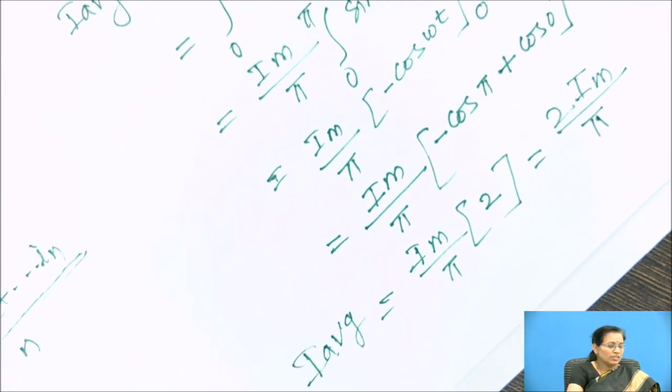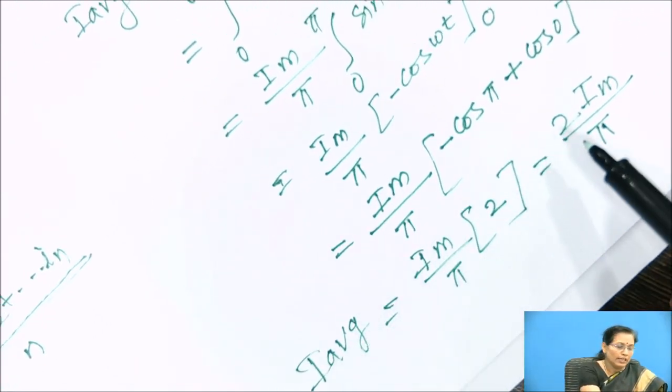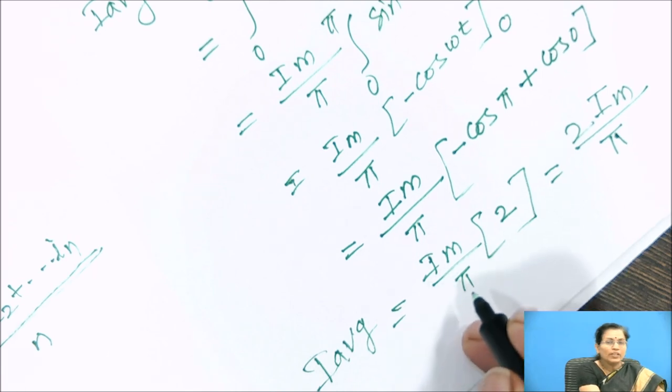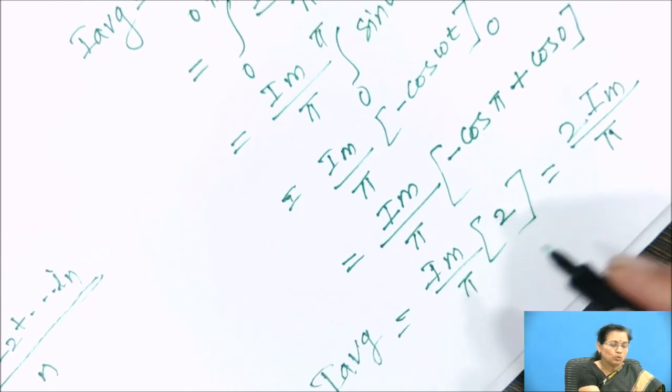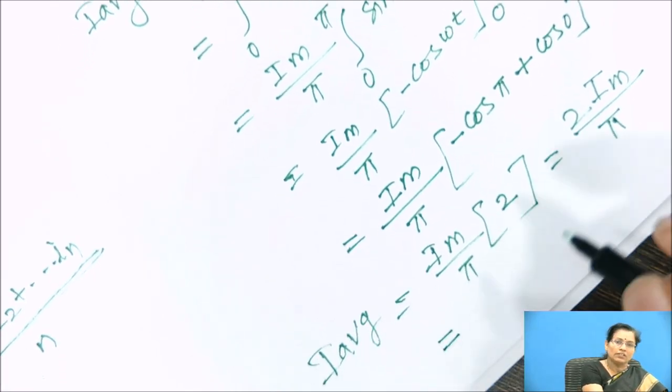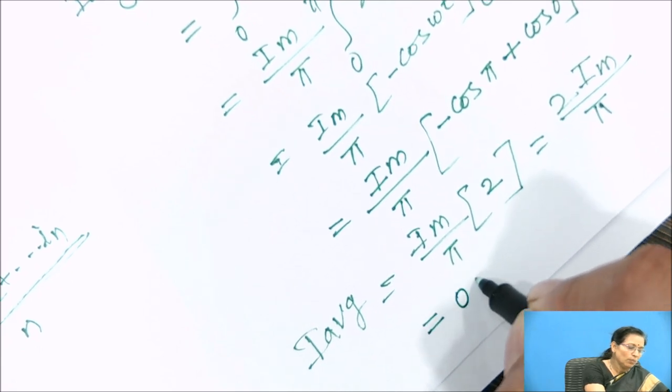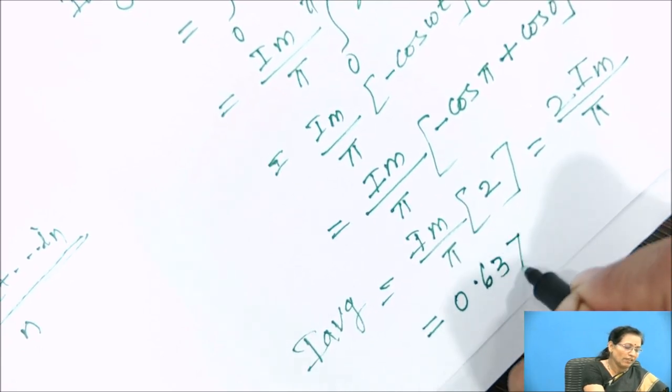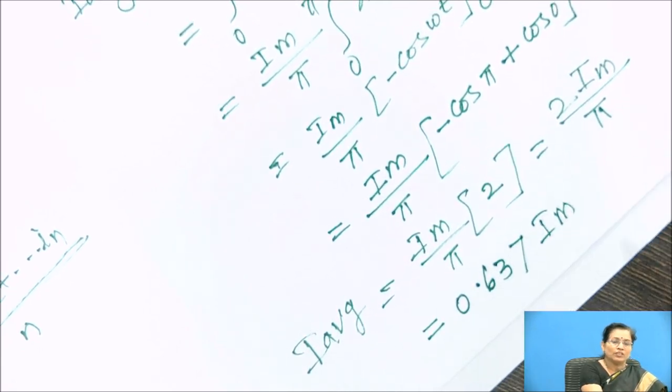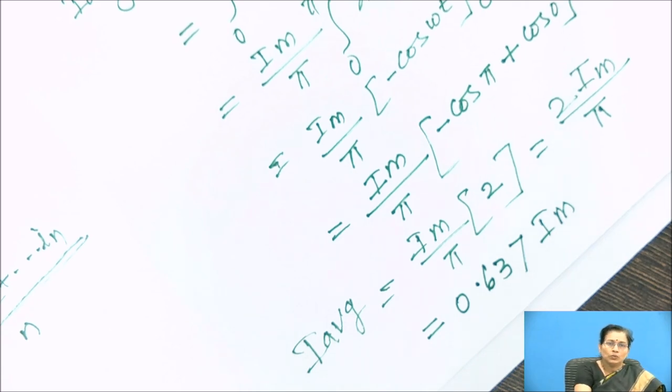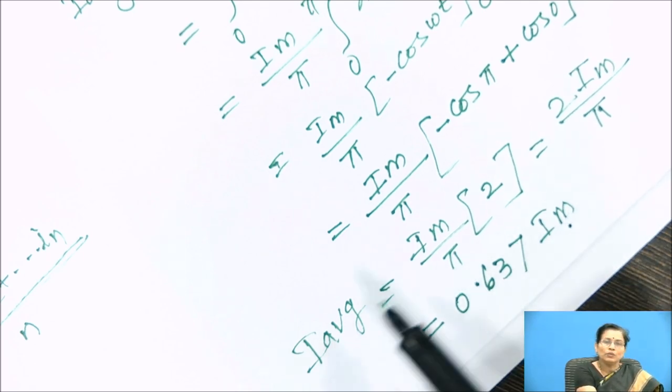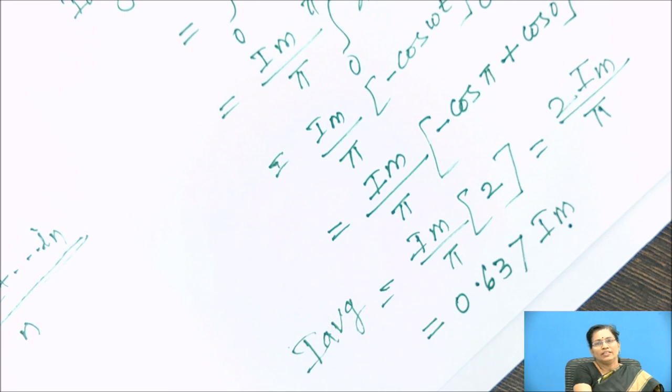So I average is given by 2 Im by pi. So if we calculate 2 by pi, we will get the value as 0.637 Im. So this is the average value as 0.637 Im. This is the relation between maximum value and the average value of the AC cycle.